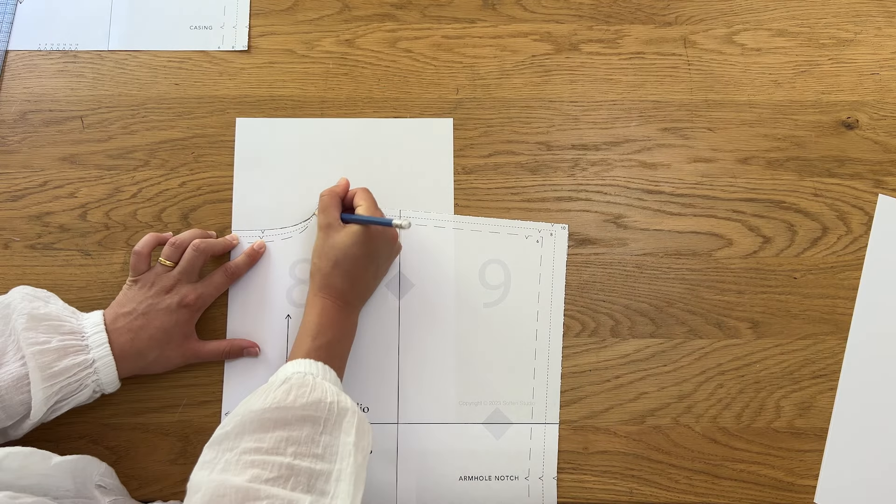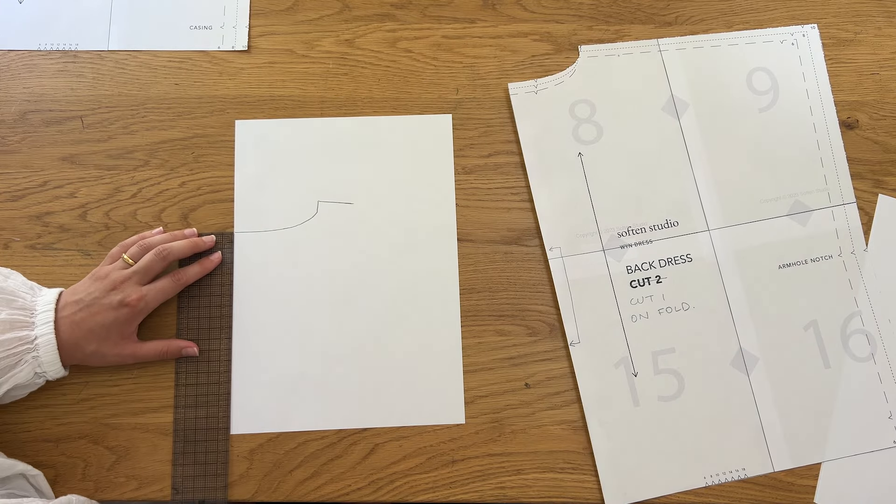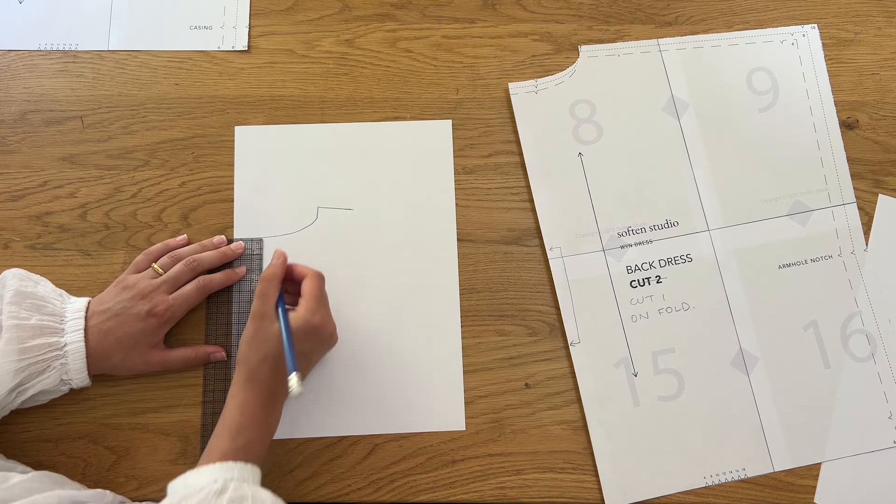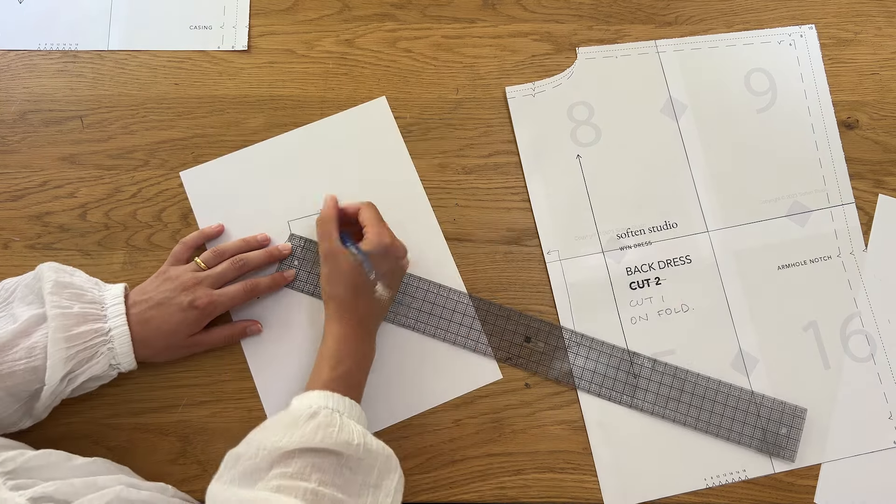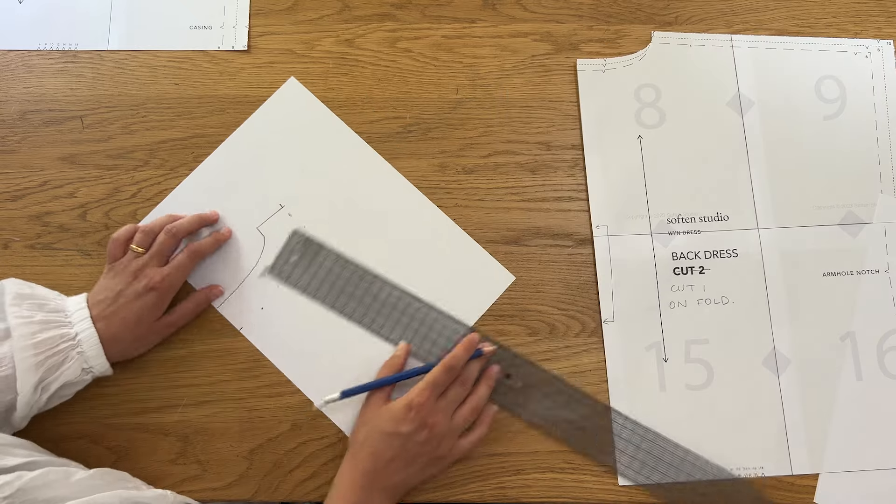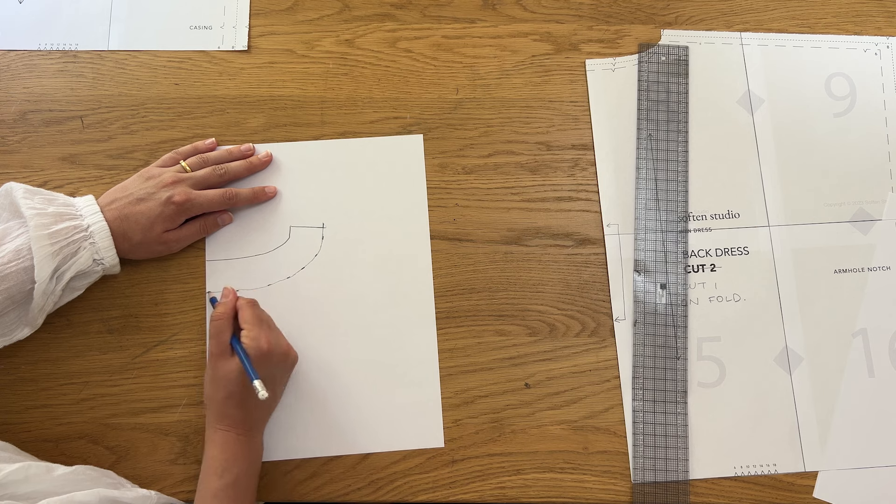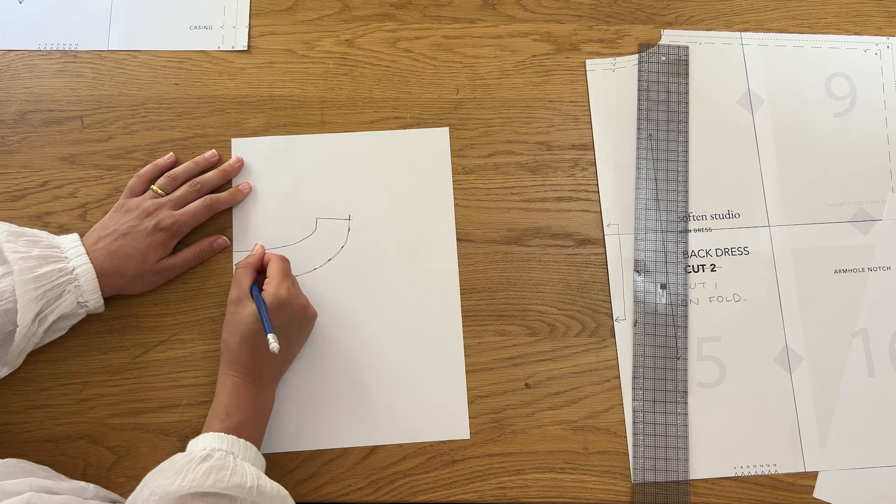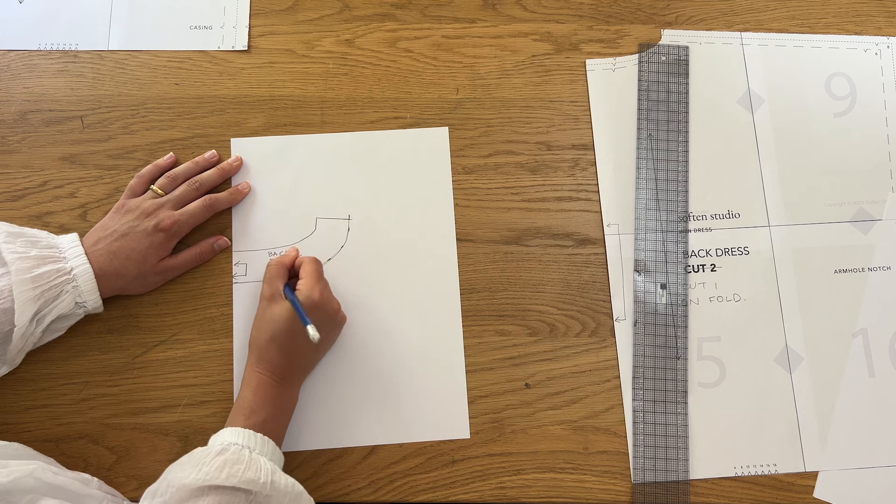Repeat all the same steps to create the back facing piece. Make sure to create both the facings the same width. The back facing will also be cut on the fold to match the back pattern piece.